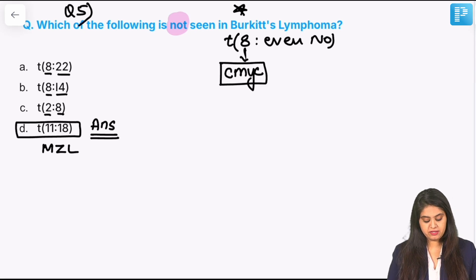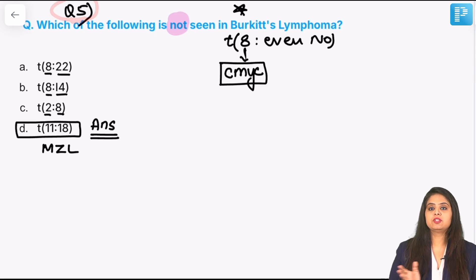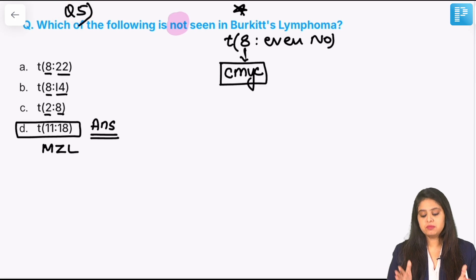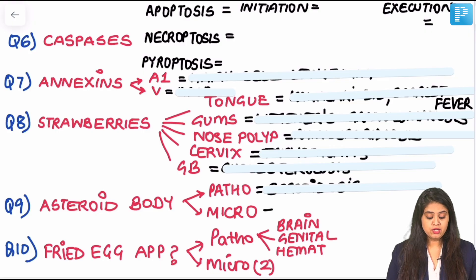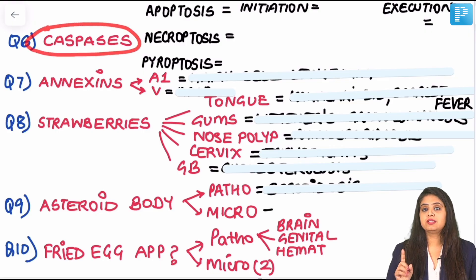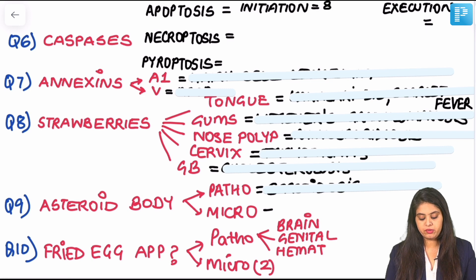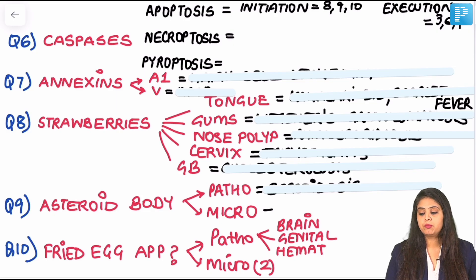Moving on. Today the first 5 questions were theory; usually I keep 5 as images, but since we did LRR with many images recently, the next 5 are one-liners. Fill in the blanks: caspases for apoptosis — for initiation: caspases 8, 9, and 10; for execution: caspases 3, 6, and 7. When talking about necroptosis, there are no caspases — it is caspase-independent. For pyroptosis, caspases 1, 4, 5, and 11 are important to know.